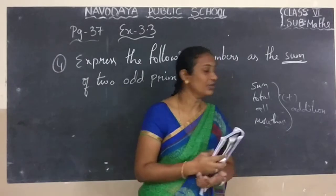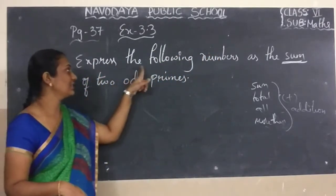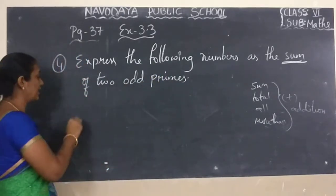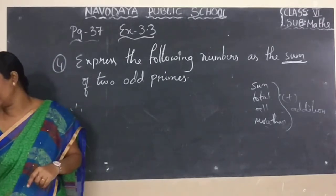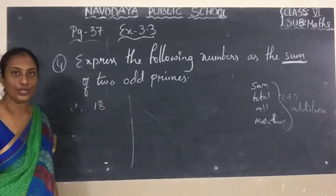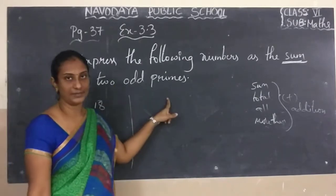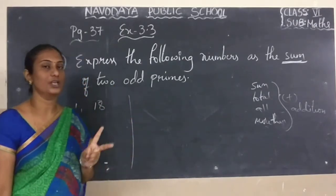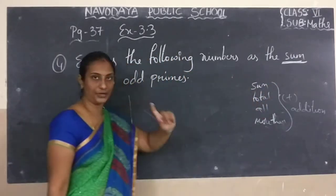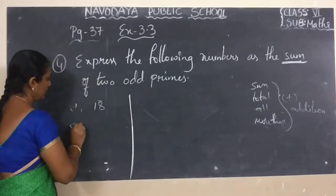Okay children, now see. What is the question they have given? Express the following numbers as the sum of two odd primes. Here they have given some numbers. What are the numbers? The first number is 18. For 18, we have to find two odd primes. We have to take two odd primes and do their sum — that means addition.